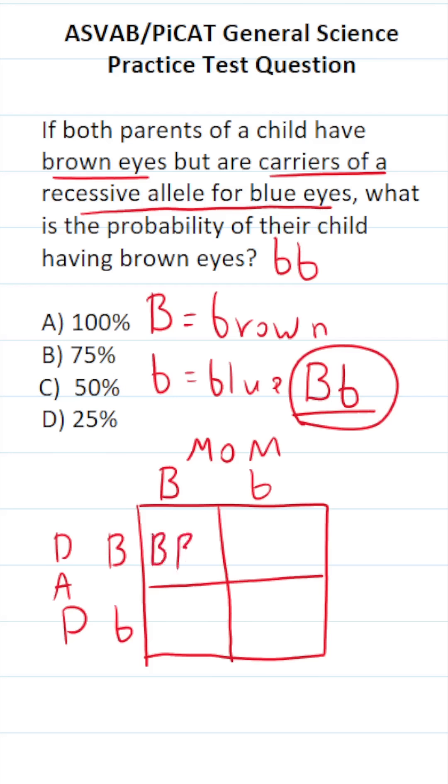Here we have big B, big B. So this offspring would have brown eyes. In this box here, we have big B from the dad, little b from the mom. So this offspring would have brown eyes, but they're a carrier of the recessive allele for blue eyes.